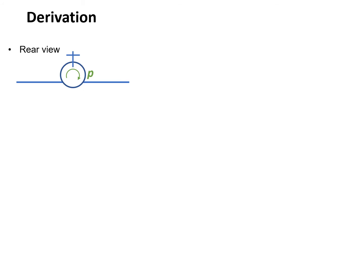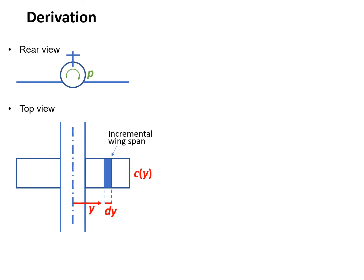The tube stands for the fuselage and the plane stands for the wing. According to this rear view, the aircraft is subject to a rolling moment P, which is a positive P. We also provide a top view showing the fuselage centerline and the wing. This is a general wing, not necessarily rectangular. In order to do the derivation, we need to consider an incremental wing section.